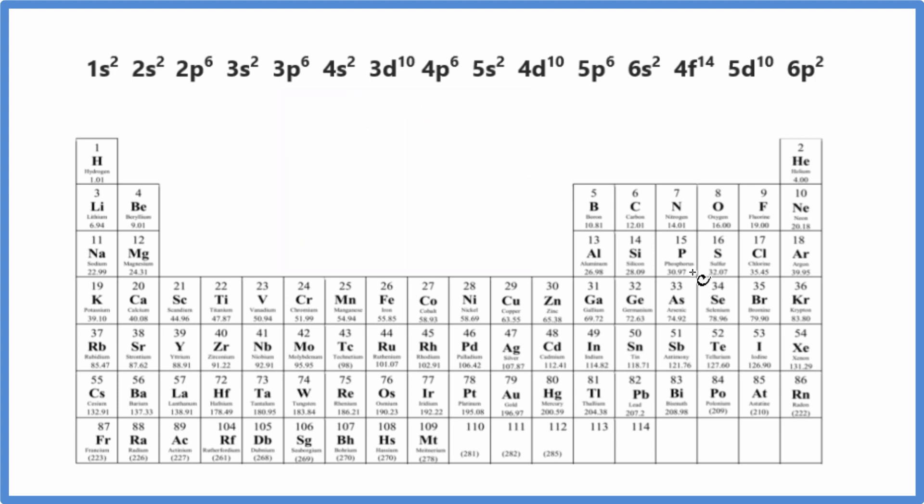We can also look at the periodic table here and find lead. So here's lead, atomic number 82. So all of these are neutral elements. This means it has 82 protons. Since it's neutral, it has 82 electrons.